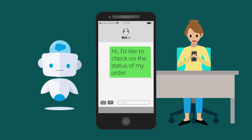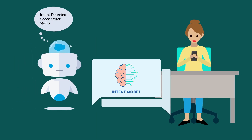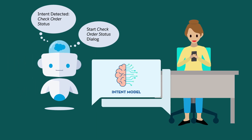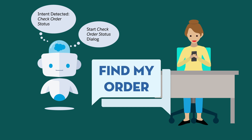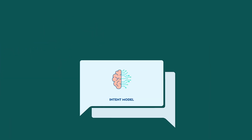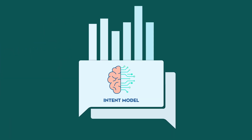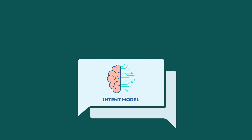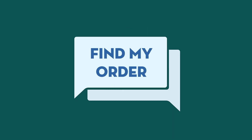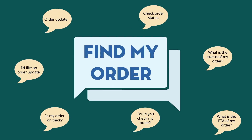Einstein Bots uses NLP via an intent model to identify customer text. These intents, such as "find my order," are tied to dialogues in the Bot Builder. The bot intent model predicts the likelihood that what the customer said matches one of the intents in the model. Different ways that previous customers asked for the intent train the intent model and are called utterances.